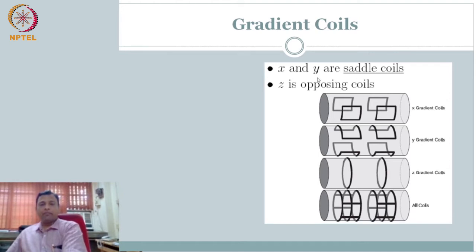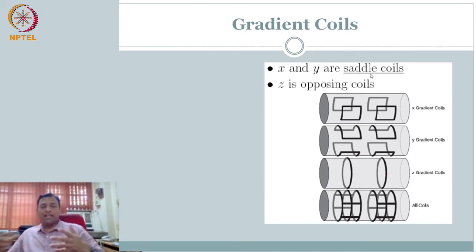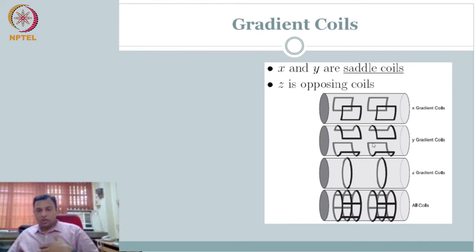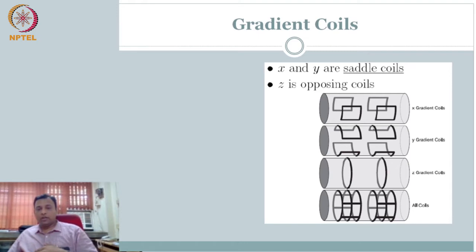The X and Y coils are called saddle coils. Just to remember — when you say saddle, what is a saddle? X, Y, Z are three dimensions. What do you mean by saddle? If you look at the Y gradient in this example, you can vividly tell why it is called saddle — like a horseback saddle. You can clearly see why the name is given as saddle. It is on the curvature surface. Y is in one direction, X is in the other. Both of them look like a saddle. That is why it is called a saddle coil.